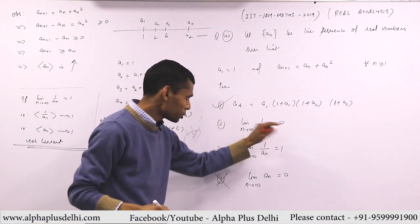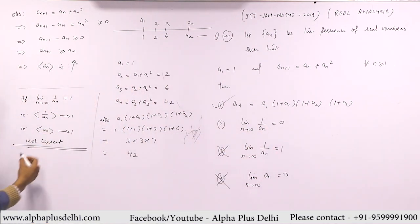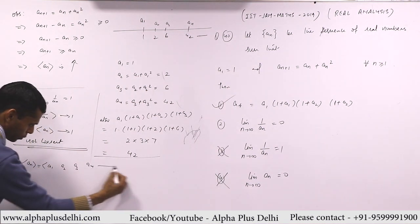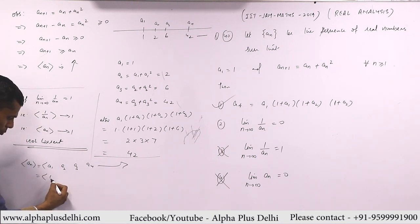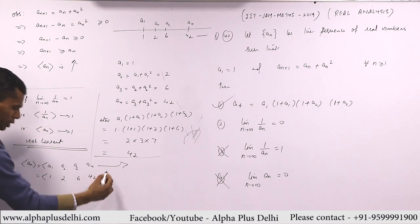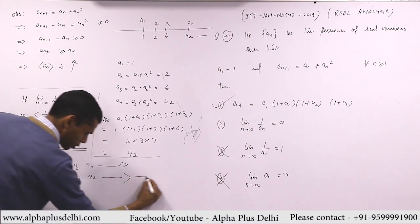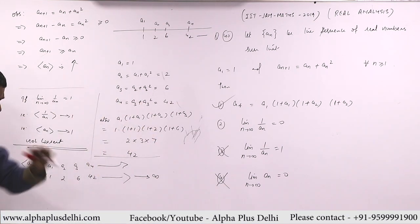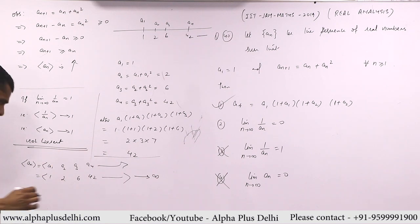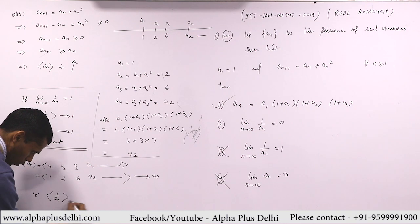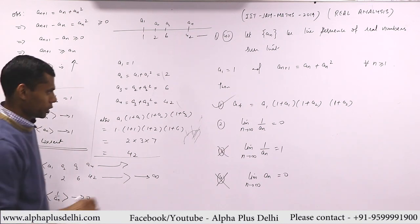We're examining the last part. What will be the limit of 1/a_n? The sequence a_n is: first term is 1, second term is 2, third term is 6, then 42. The next is even greater than 42. So as a sequence this goes to infinity. Agreed? So the limit of a_n is infinity. Then what will be the limit of 1/a_n? Obviously zero. So the second one is also correct.